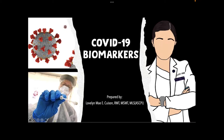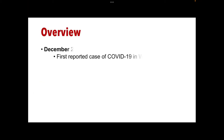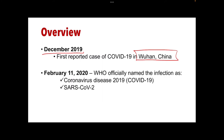Hello everyone. For this topic, I will discuss COVID-19 biomarkers. Let's start with the overview. The first reported case of COVID-19 was in Wuhan, China in December 2019. The World Health Organization, on February 11, 2020, officially named this infection as Coronavirus Disease 2019, or COVID-19.